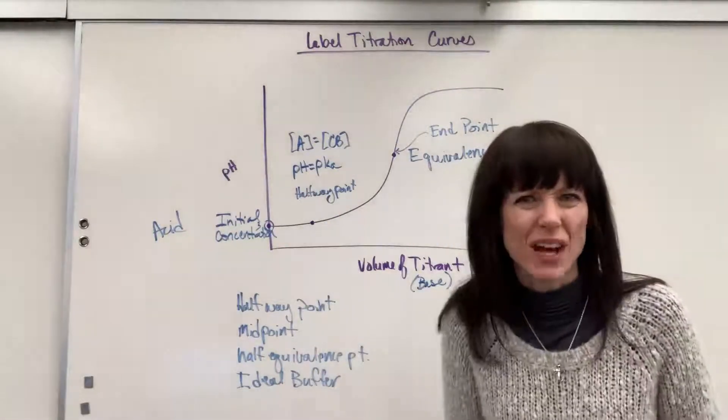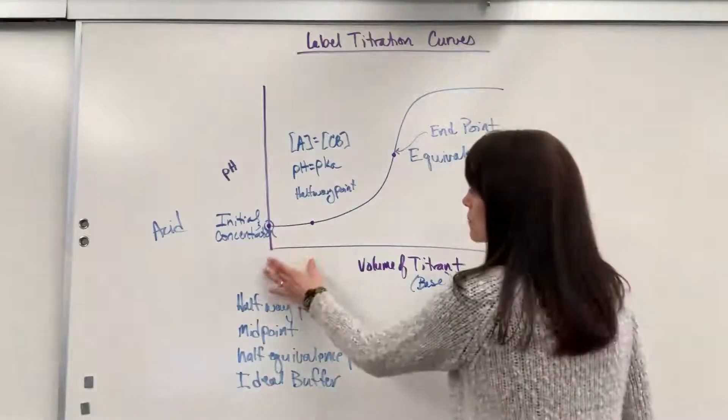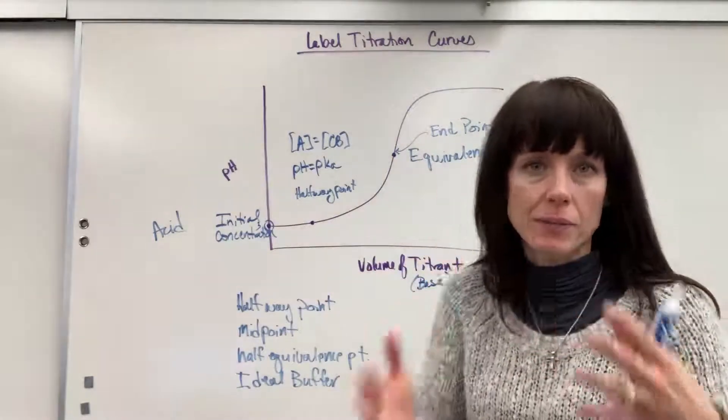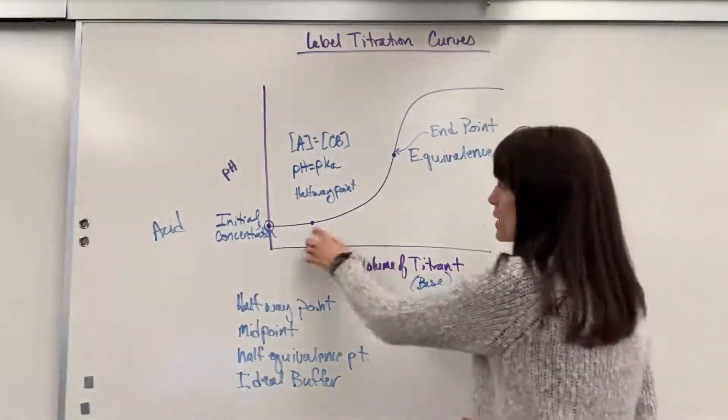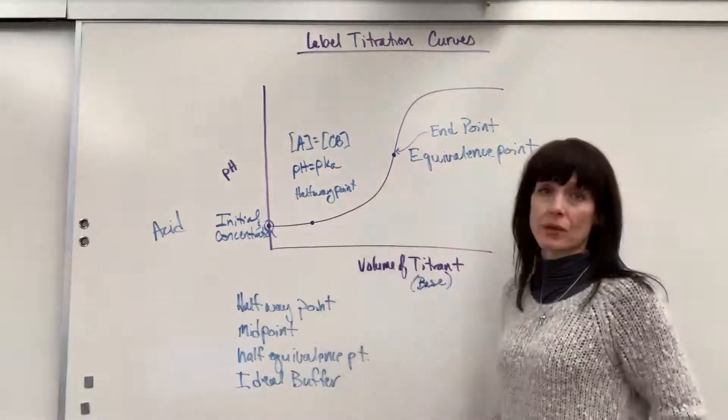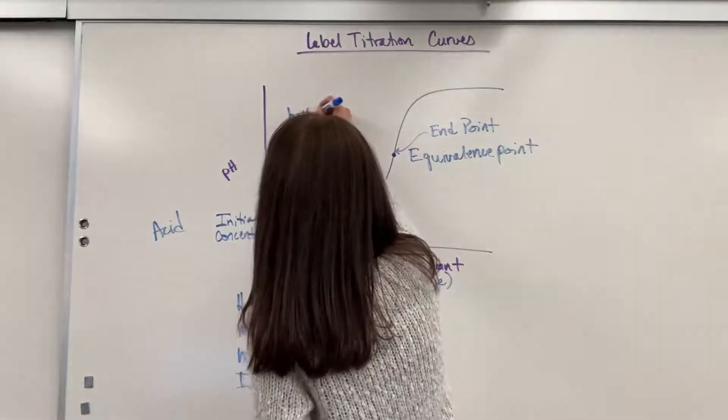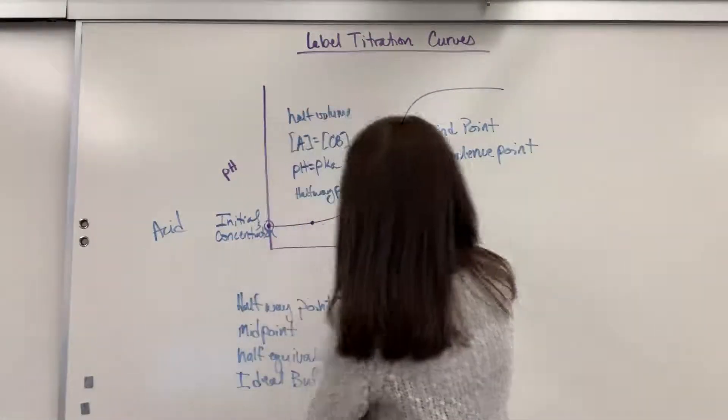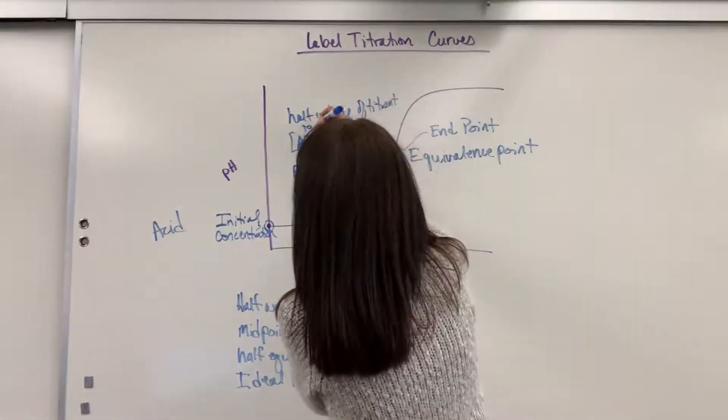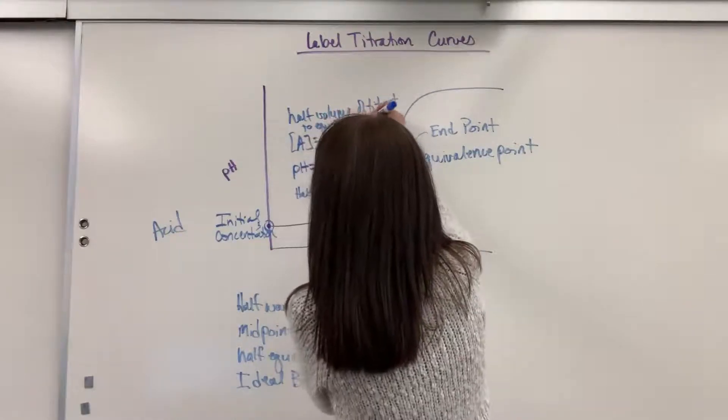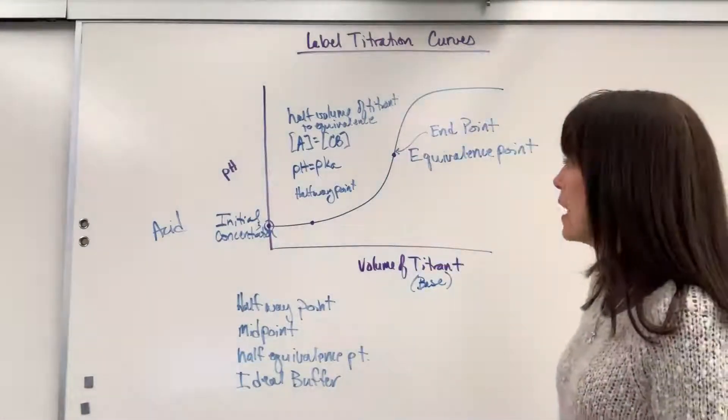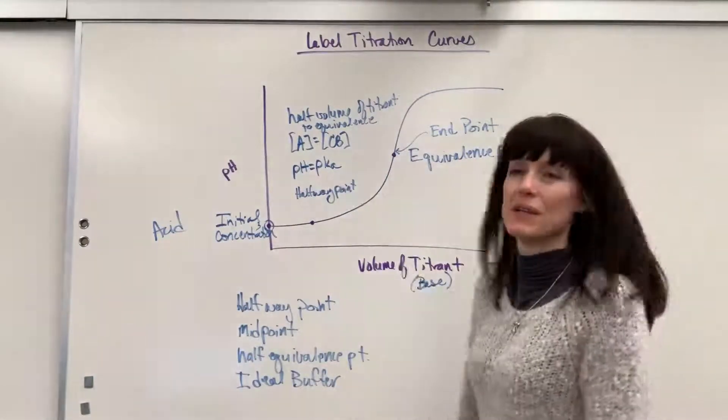This volume, sorry, and I didn't do that to scale. Sorry about that. This volume and this volume, that divides it in half. So you'd have like 20 mils and 20 mils. Sorry, pretend that I did that in the middle really pretty. So that shows you exactly half the volume to get to the equivalence point. I'm going to write this down here too. Half volume, right? Volume of the titrant to equivalence. So we're halfway there. We're halfway there. So half, midpoint, you can see why they named it that way. And the really cool thing is that's where pH equals pKa.